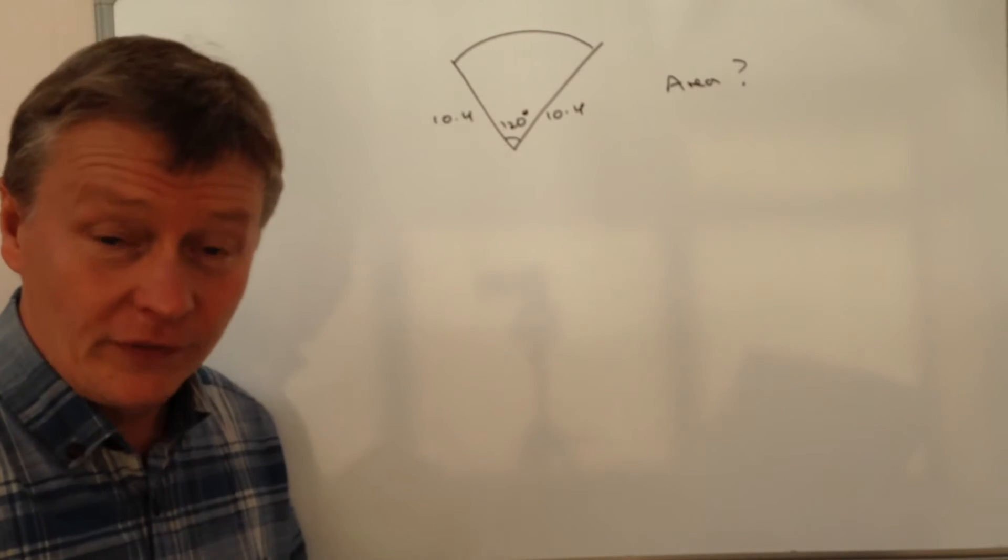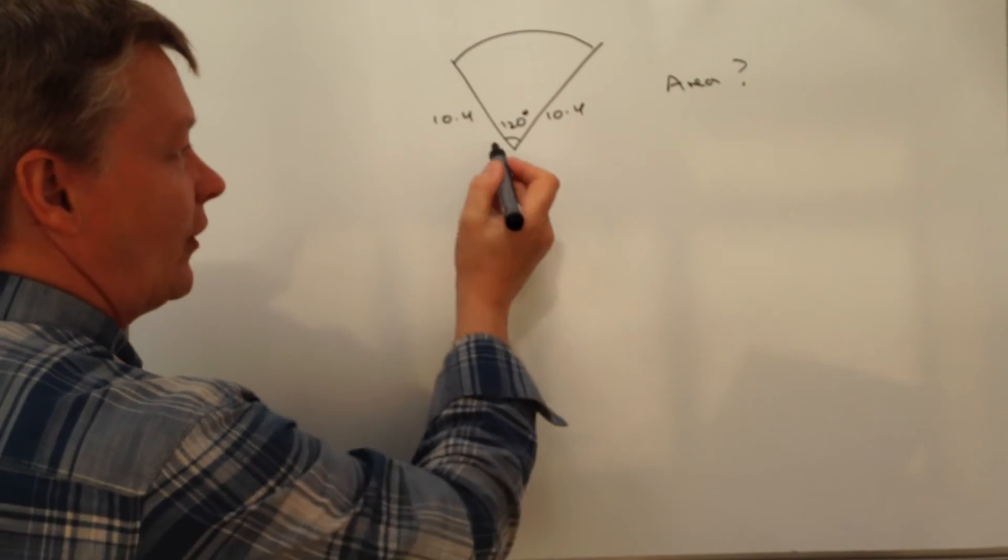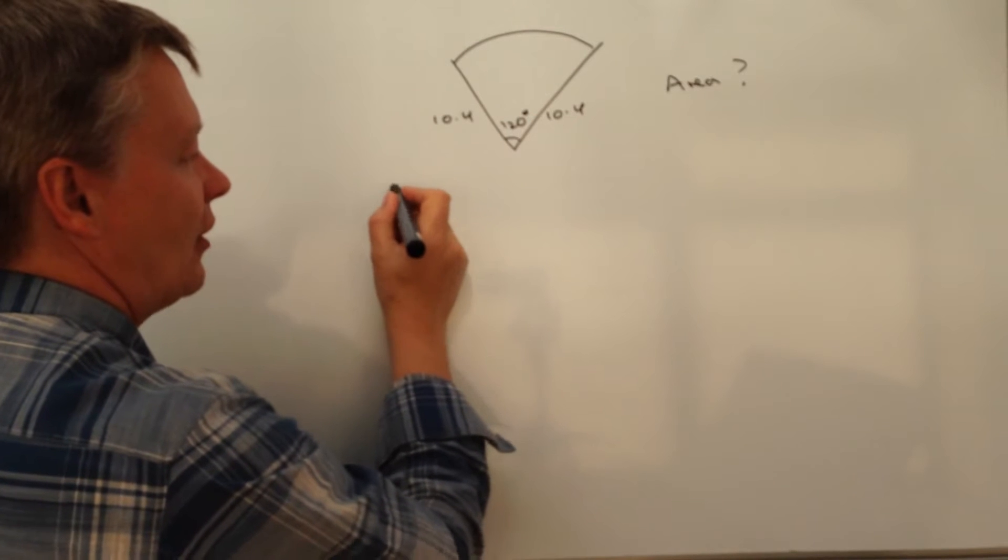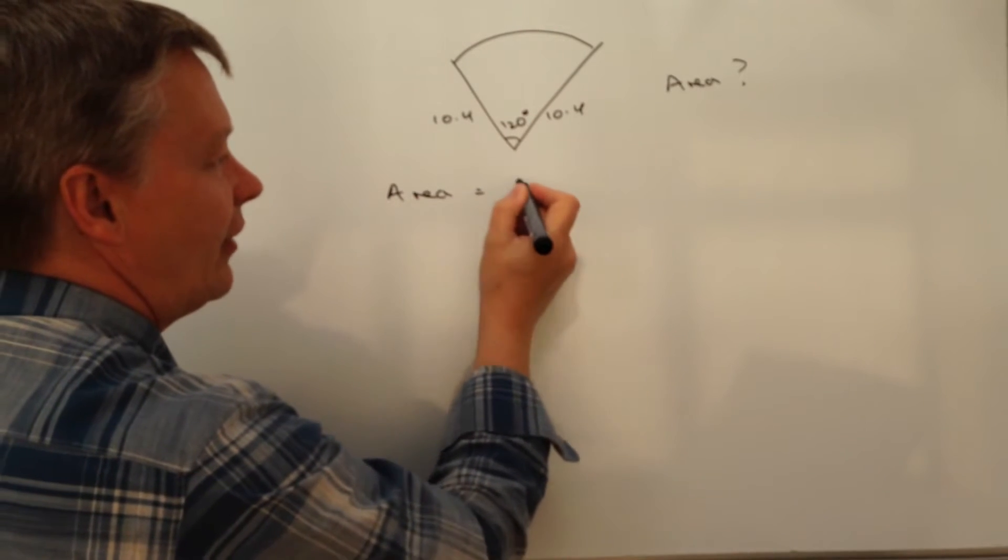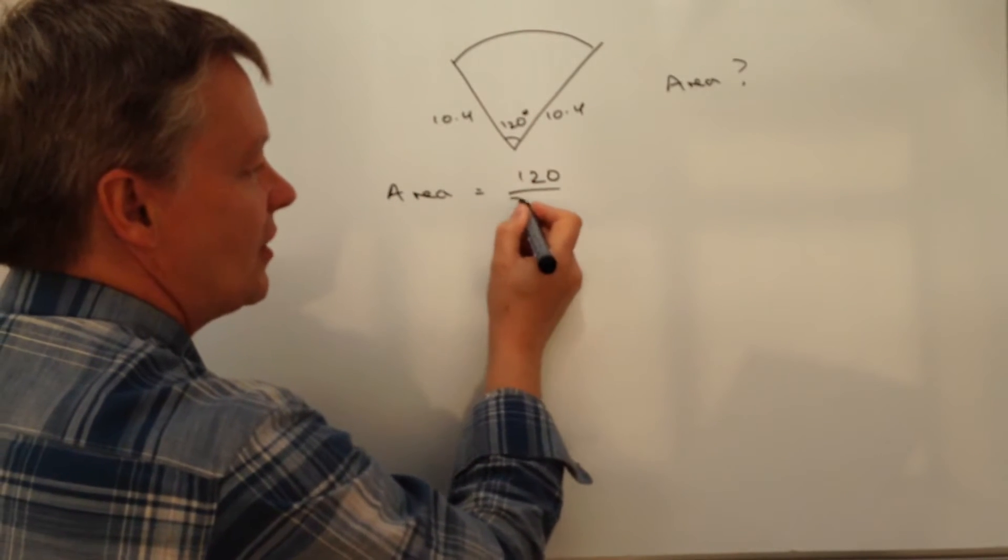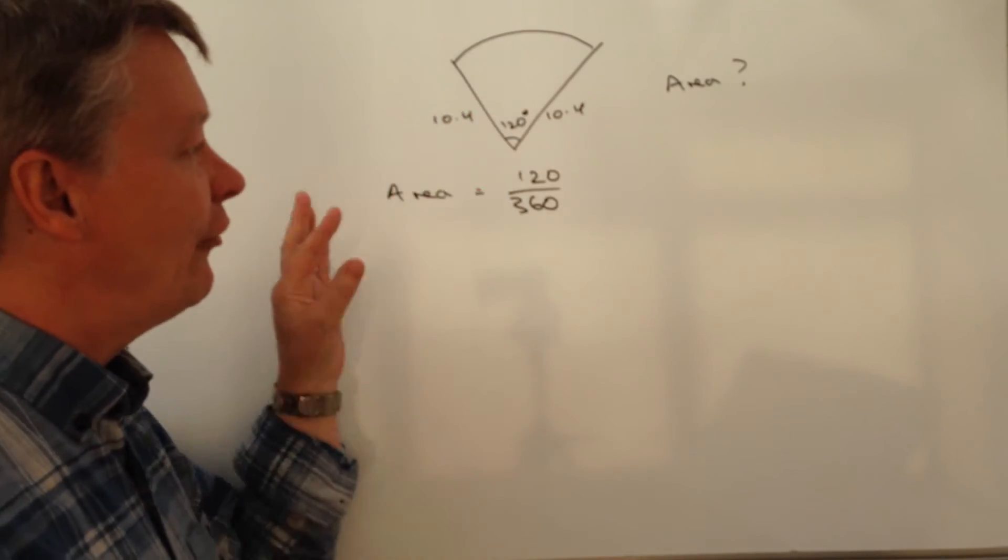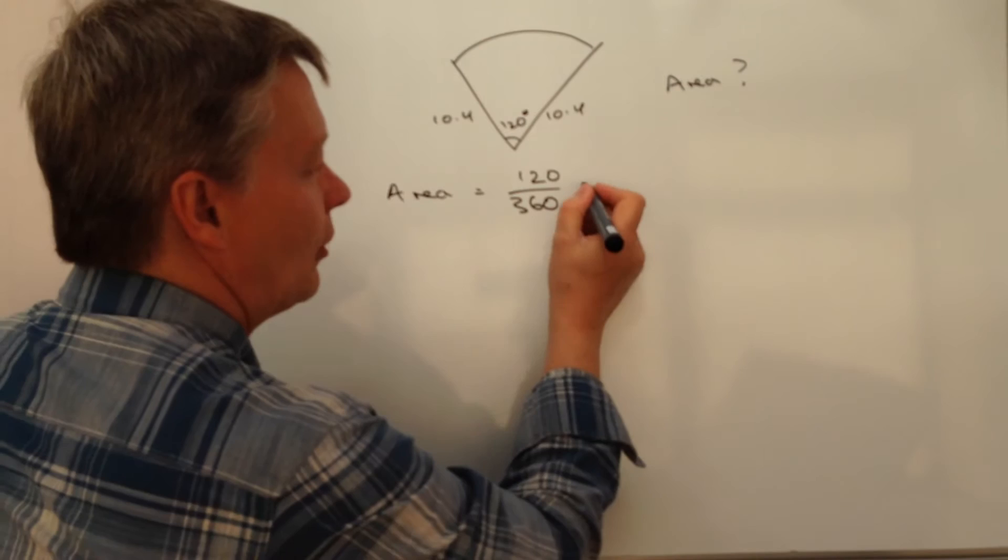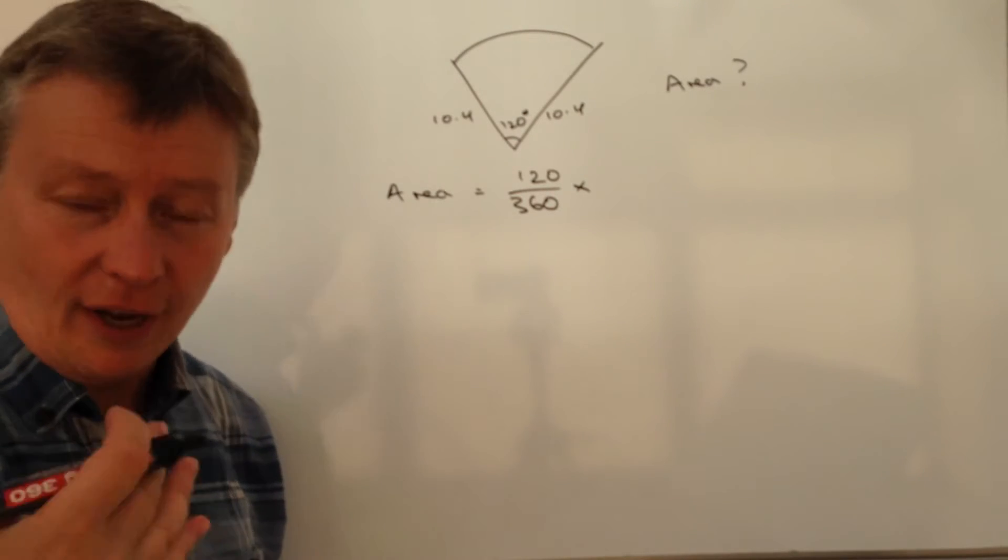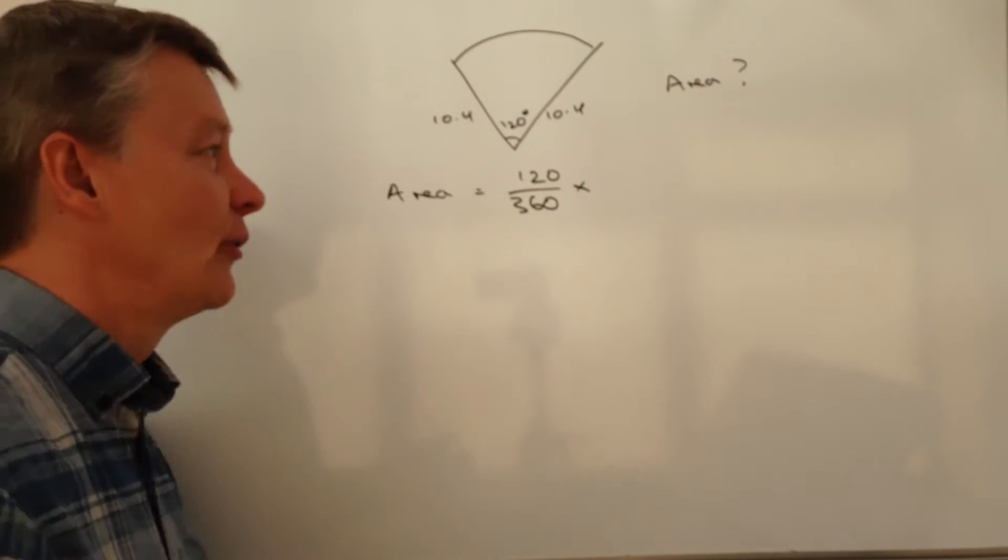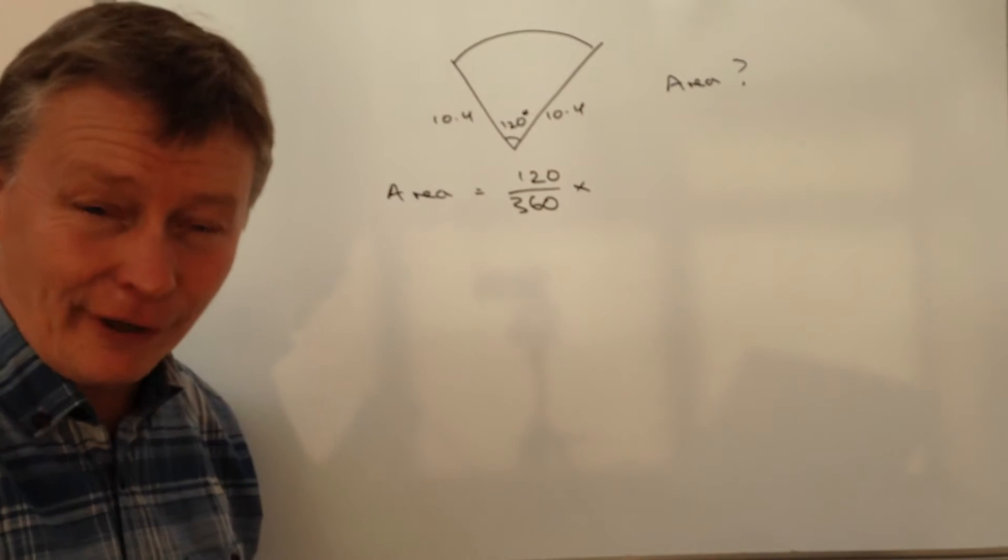And the way that we've done that is we've said, well, we've got a sector or a fraction of a circle. So that's going to give us the area equals 120 out of the 360 degrees of a full circle. And we're going to multiply that by pi r squared, which is the formula that we use to work out the area of a circle.